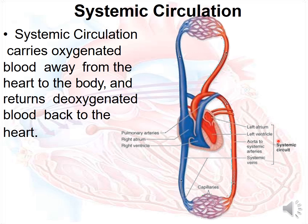The systemic circuit consists of the left atrium, left ventricle, aorta, and systemic arteries. The systemic veins return deoxygenated blood to the right atrium.